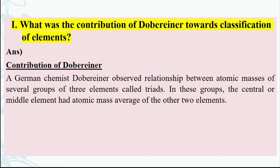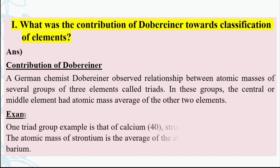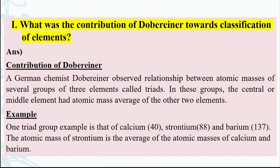These groups were arranged so that in every group, the mass of the central element was determined by taking the average of the first and third elements. For example, one triad group consists of calcium, strontium, and barium. The atomic mass of strontium (88) is obtained by adding calcium's mass (40) and barium's mass (137) and dividing by two, giving the answer 88 — which is the atomic mass of strontium.